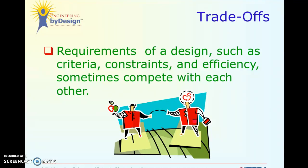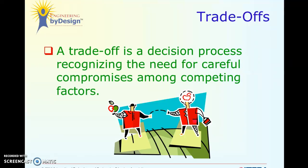Talking about criteria and constraints leads right into trade-offs, which we've already discussed. Trade-offs are the requirements of a design that may sometimes compete with one another. Criteria and constraints are kind of in competition — they're not really partners and most of the time it's hard to balance the two. If you didn't have constraints, your problems with your criteria would be really easy. A trade-off is a decision process recognizing the need for careful compromises among competing factors — making sure we follow both requirements and limitations at the same time.